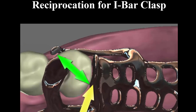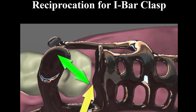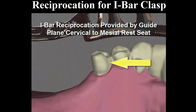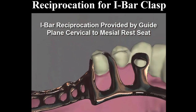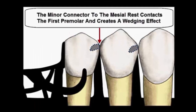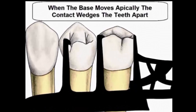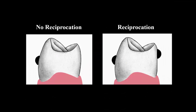The reciprocation for an eye bar comes from the lingual aspect of the proximal plate as it wraps around the corner of the tooth. This animation shows that, as well as how the guide plane located apical to the mesial rest also provides reciprocation through the minor connector. If the minor connector going to the rest seat contacts the tooth in front of it, it creates a wedging effect that defeats the purpose of the eye bar or RPI system. You can see the benefit of having a reciprocal clasp located on the lingual surface.